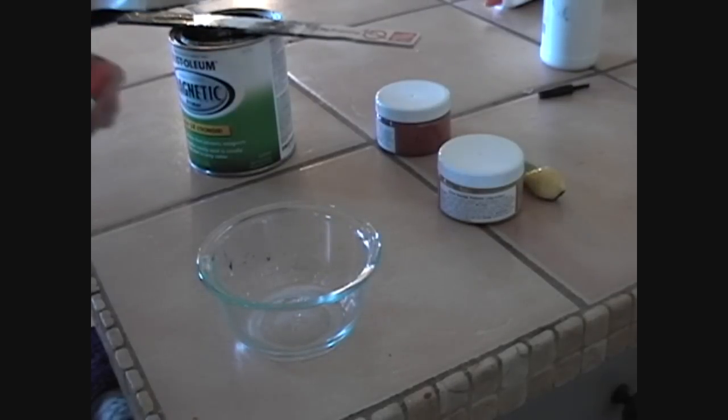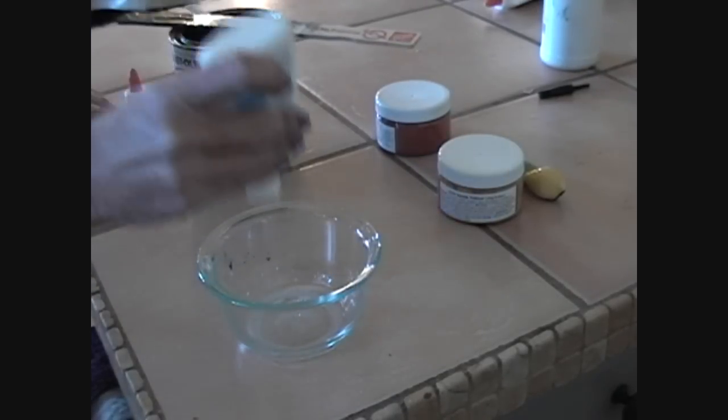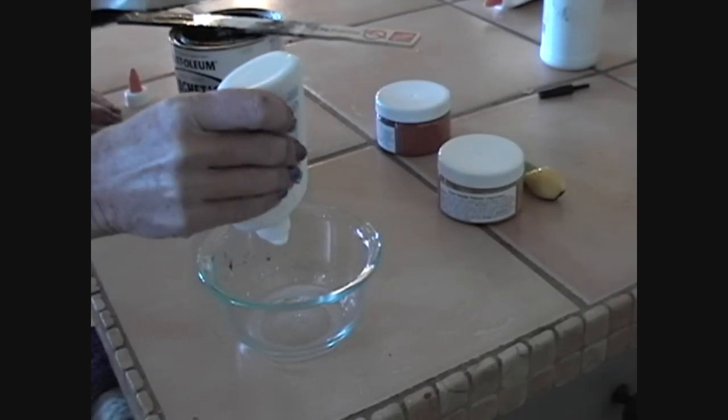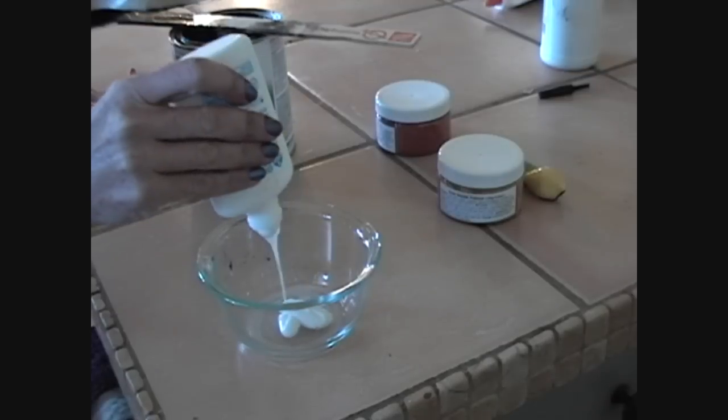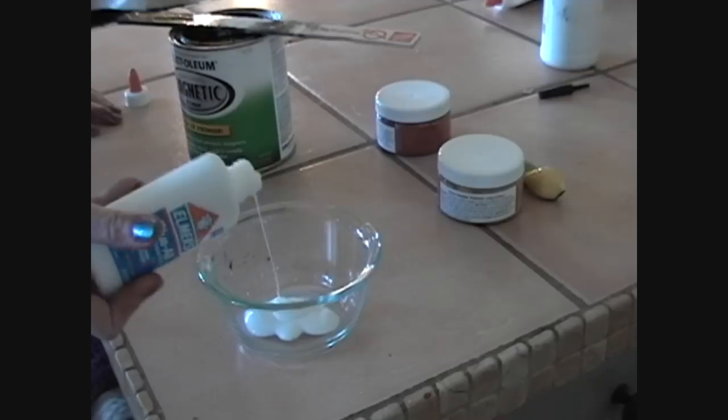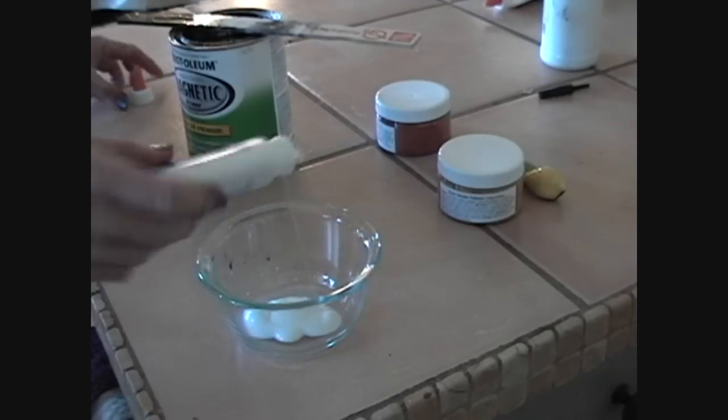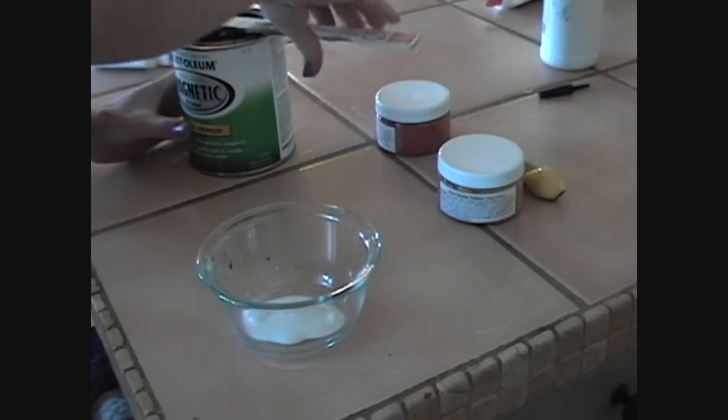We are going to make crawling skin. It's the same recipe as slime. I have some magnetic primer and I'm just going to take a chunk. Here's white school glue, a good amount of that.